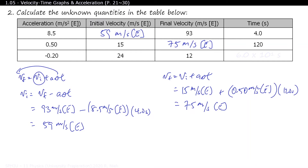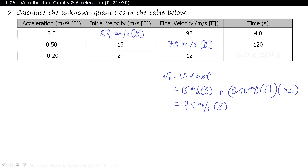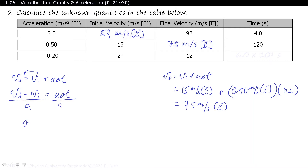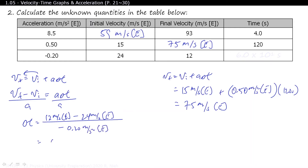As for the last one, we're isolating for time — and this is probably the most challenging one. Starting with VF = VI + AΔT, we bring the VI term over: VF − VI = AΔT. Then we divide both sides by A to get ΔT = (VF − VI) / A. So ΔT = (12 m/s east − 24 m/s east) / (−0.20 m/s² east), and you'll end up getting 60 seconds.